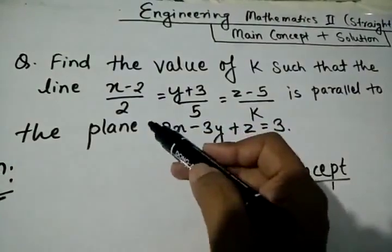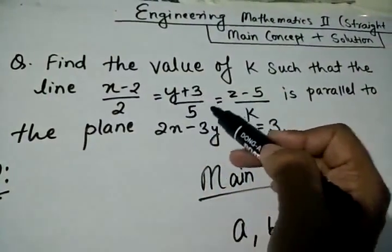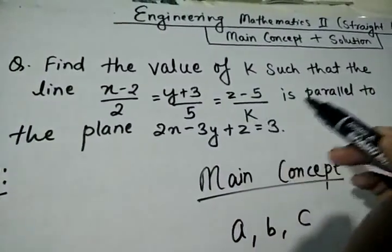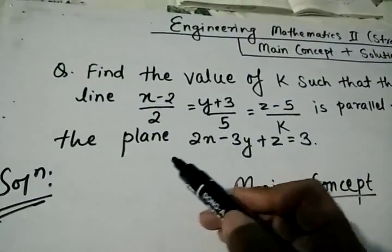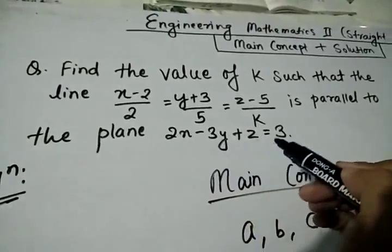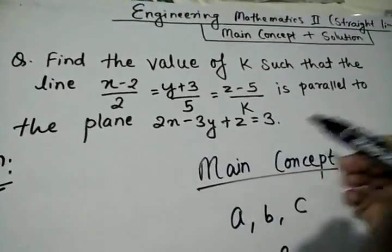(X - 2)/2 = (Y + 3)/5 = (Z - 5)/K is parallel to the plane 2X - 3Y + Z = 3.